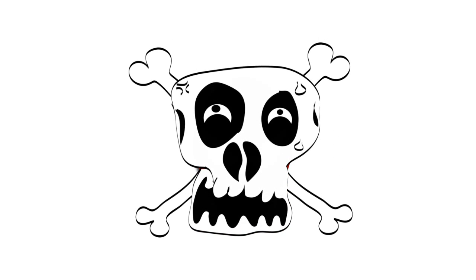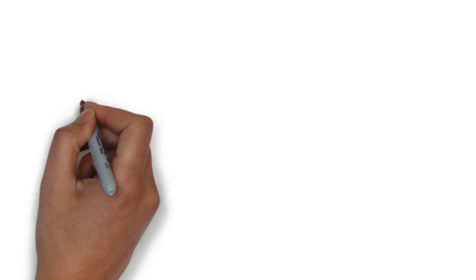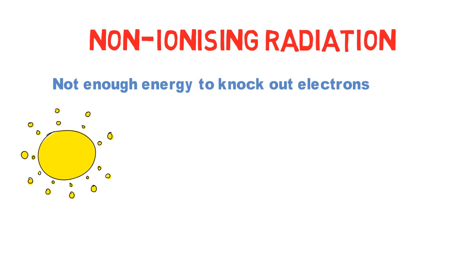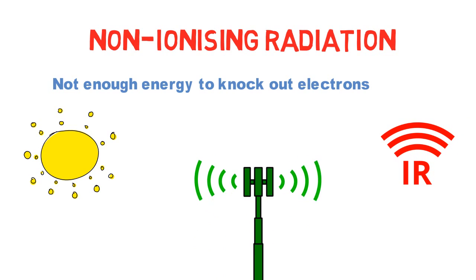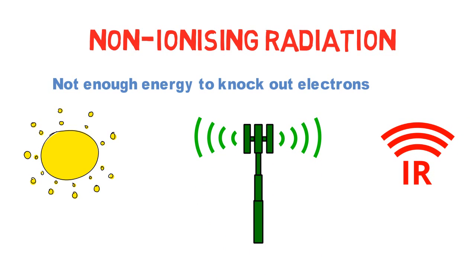But chances of death after such exposure are much higher than turning into Spiderman. On the other hand, a non-ionizing radiation is the one that does not carry enough energy to knock out electrons from atoms or molecules. Sunlight, infrared waves and mobile tower radiation are its examples. They do not produce any lethal effects in living tissues like ionizing radiation.